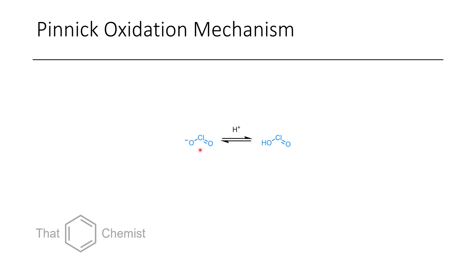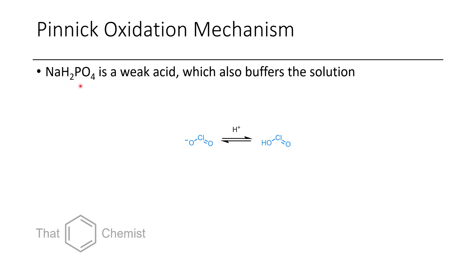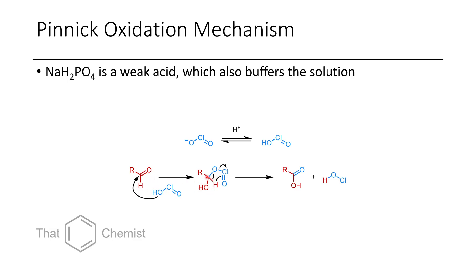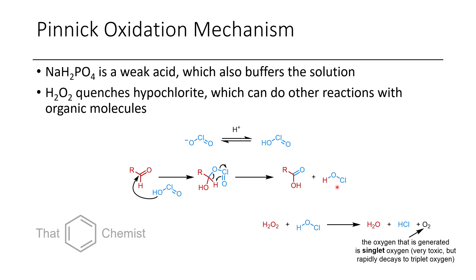The first step of the Pinnick mechanism is that chlorite is protonated by acid, forming chlorous acid — this is an equilibrium because the acid is weak. Sodium hydrogen phosphate is typically used because it's a weak acid with a pKa of around 7. The chlorite is then able to attack the aldehyde, forming a hemiacetal-like species. It then oxidizes the carbon–oxygen bond to a carbonyl, cleaving the oxygen–chlorine bond, which reduces the chlorite to hypochlorous acid. Hydrogen peroxide is used to quench the hypochlorous acid, producing water, hydrochloric acid, and oxygen.